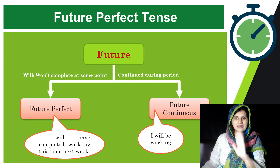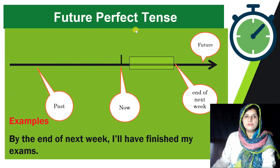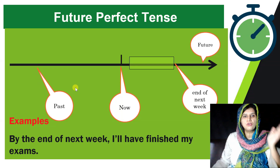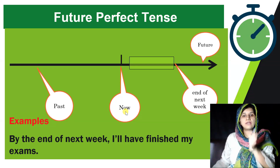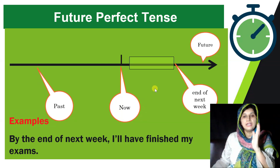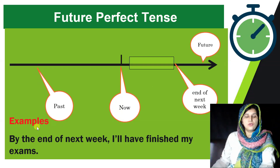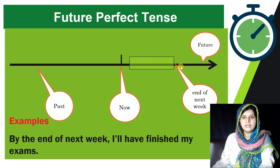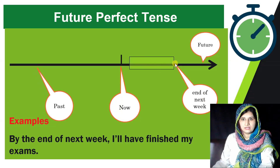Now we'll see this concept through a time diagram. 'Now' represents the present moment; anything before is past and everything after is future — whether five minutes or five centuries from now. For example: 'By the end of next week, I will have finished my exams' — we are talking about a specific future time moment when that action will be completed.